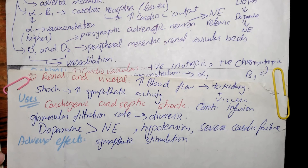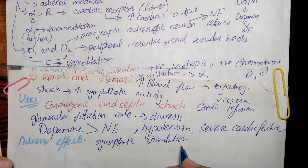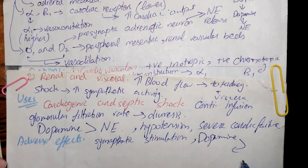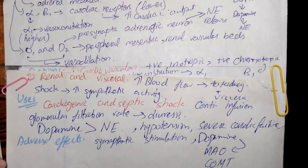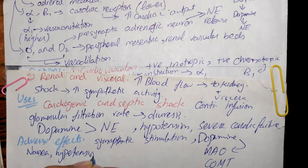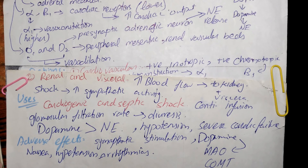Regarding adverse effects, dopamine can cause effects similar to those of sympathetic stimulation. However, dopamine is rapidly metabolized by MAO (monoamine oxidase) and COMT (catechol-O-methyltransferase), and therefore its adverse effects are short-lived. Such adverse effects include nausea, hypertension, and arrhythmias.